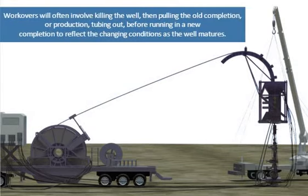Workovers will often involve killing the well, then pulling the old completion or production tubing out before running in a new completion to reflect the changing conditions as the well matures.